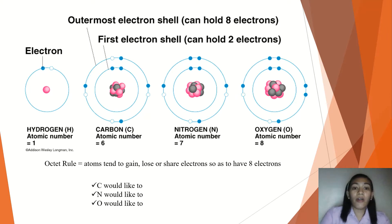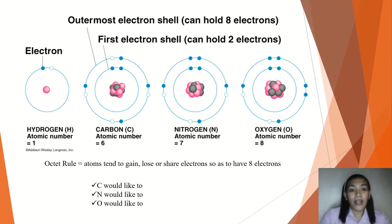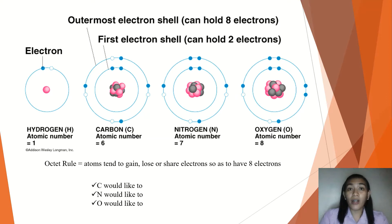Carbon has an atomic number of six. Therefore, it has six electrons. Two would be the innermost electrons or core electrons, and then you have four outermost or valence electrons.